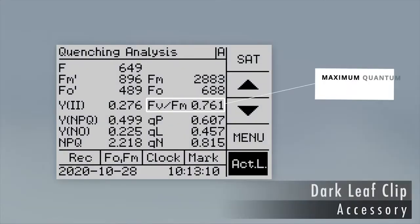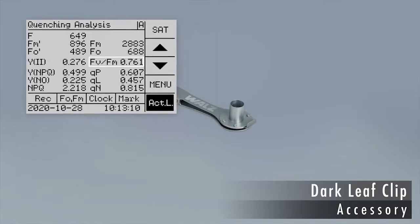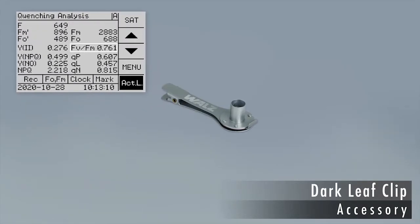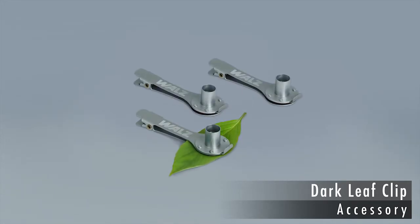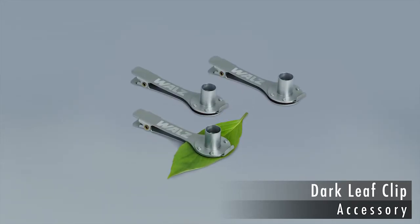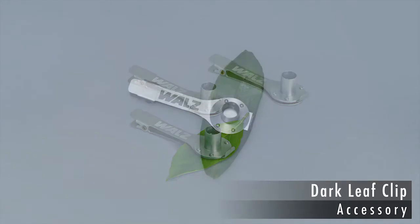The maximum quantum yield of Photosystem II, the FV over FM parameter, responds with sensitivity to many stress factors. Measuring the FV over FM requires dark acclimation. For this purpose, Waltz has developed a dark leaf clip.